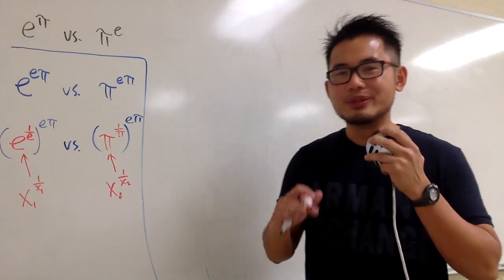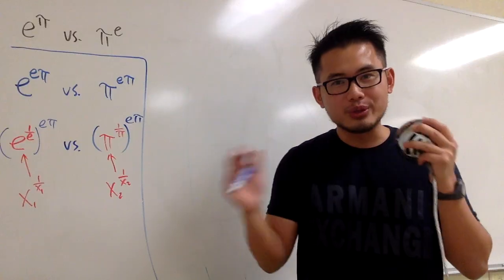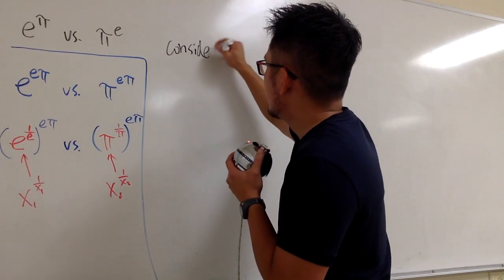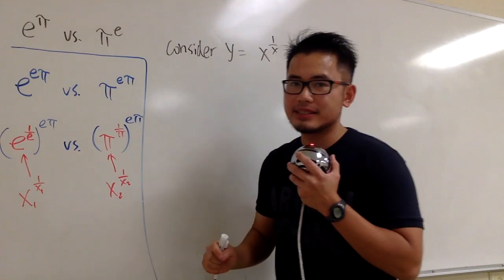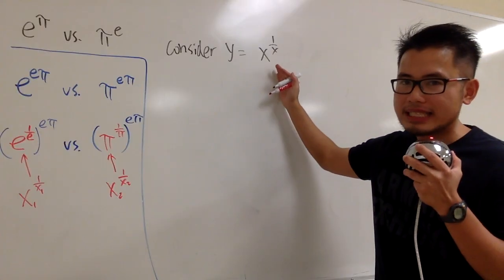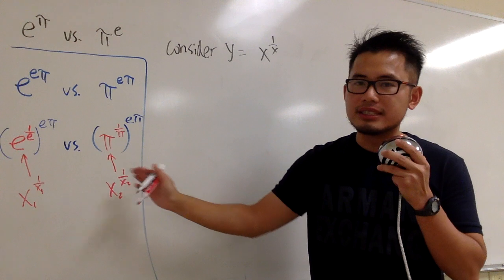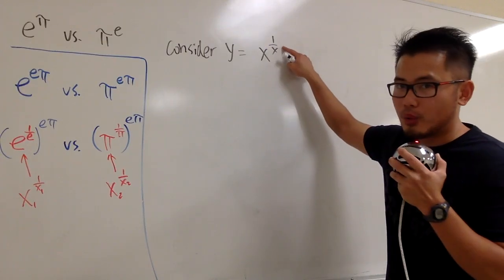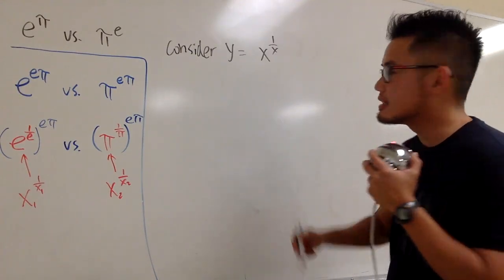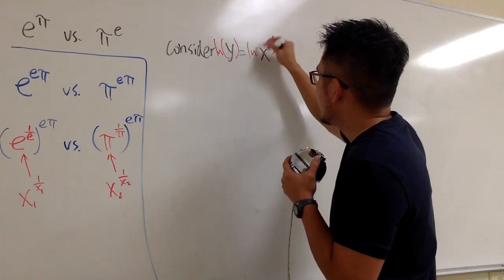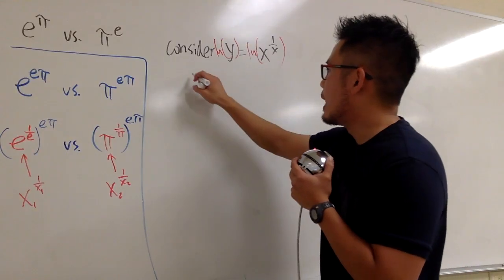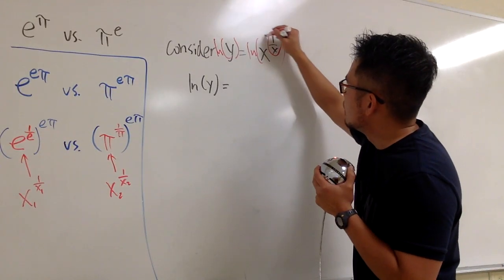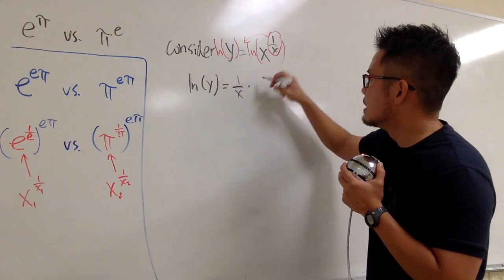That's how we are going to do it — I'm going to use calculus and talk about the curve y equals x to the 1-over-x. The strategy is to find the minimum or maximum of this curve to help decide which one is bigger. To find the minimum or maximum, we first find the first derivative. This is a function-to-a-function power, so to find the derivative we take the natural log of both sides. On the left-hand side we have ln y, and on the right we bring the power 1-over-x to the front, giving (1/x) times ln x.